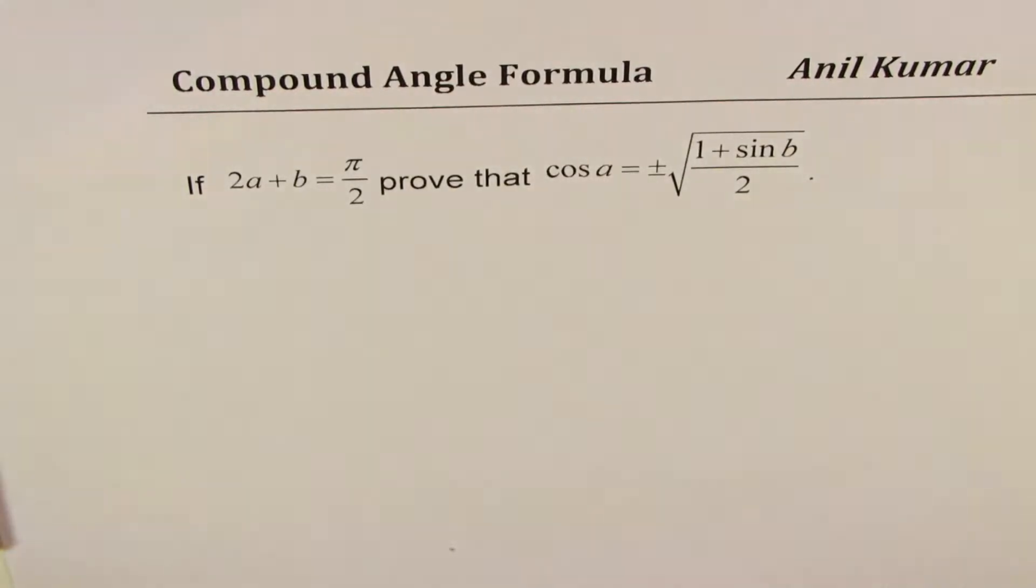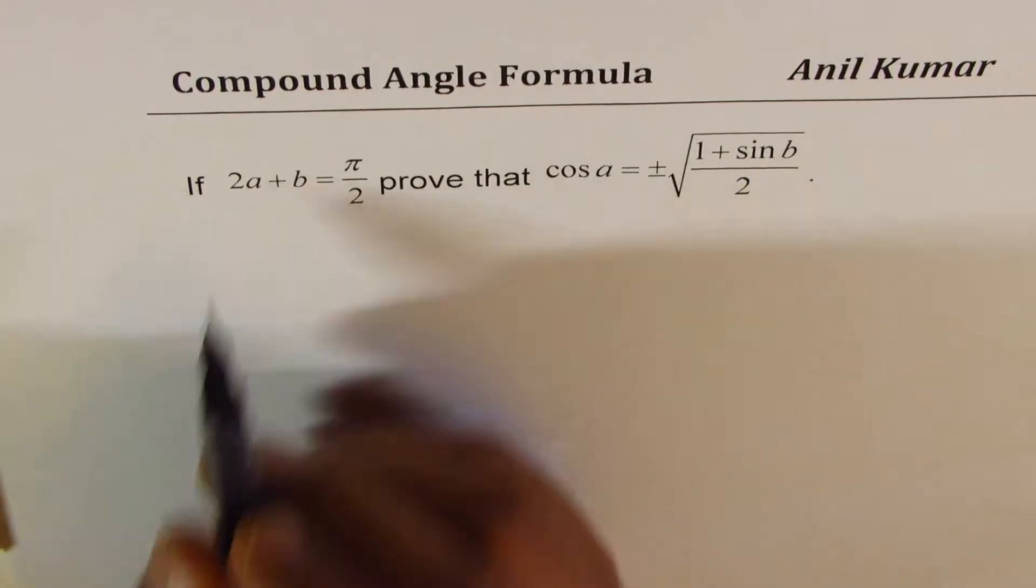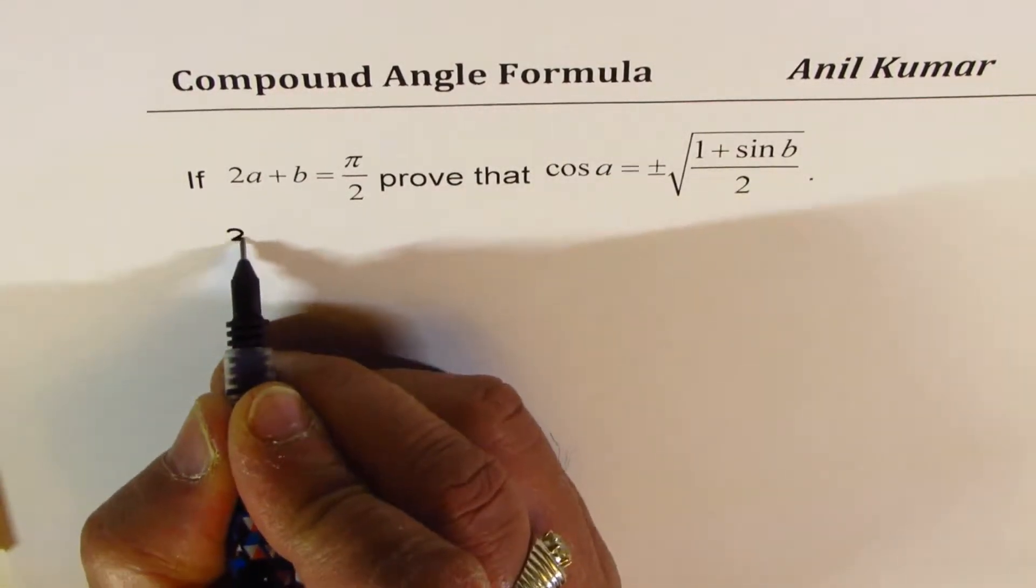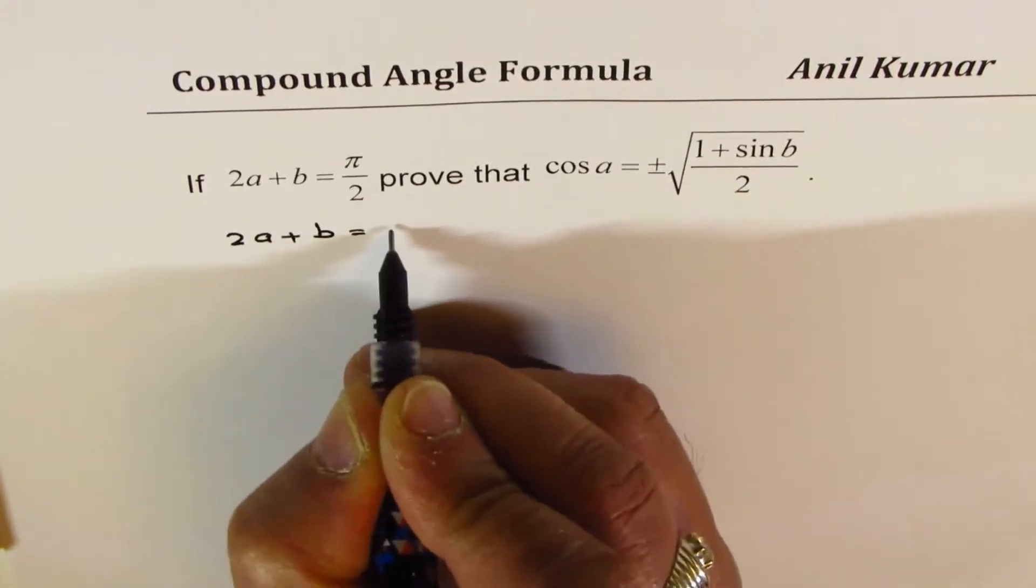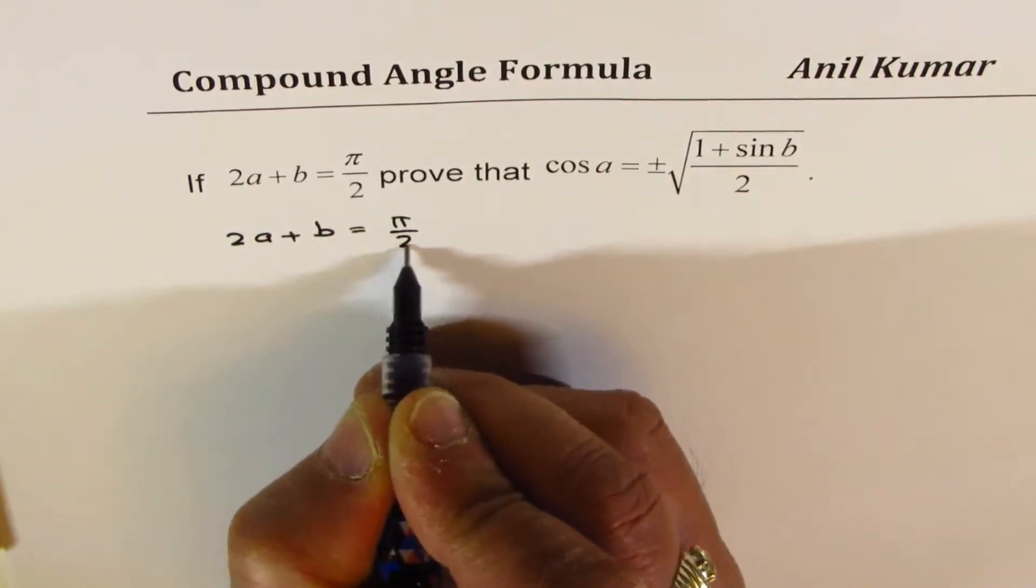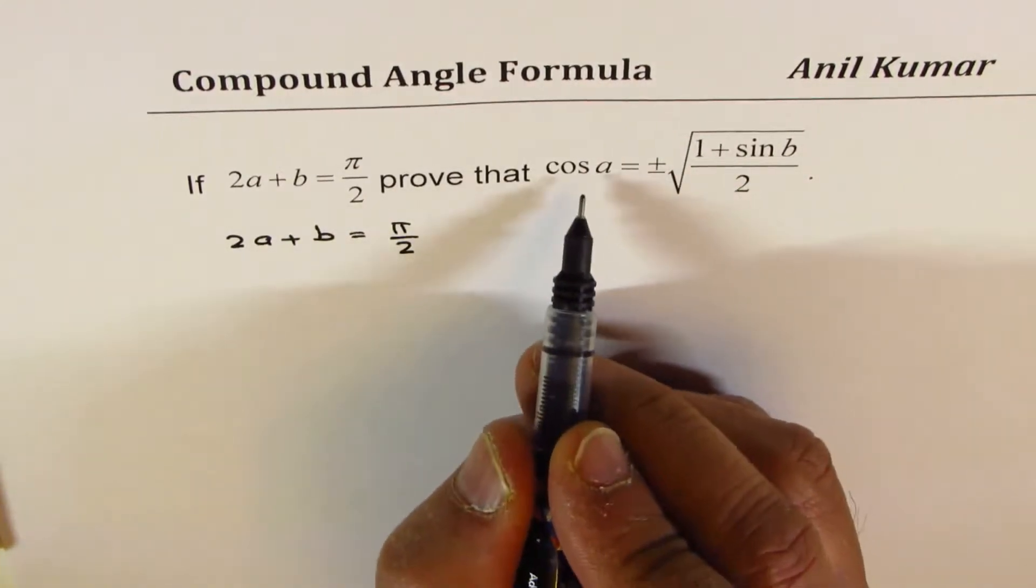Now this is a thinking question and very difficult to solve. Understand the strategy which we are going to follow. What we are given here is 2a plus b equals pi by 2. We want a on one side, b on the other side.